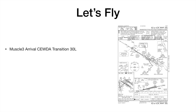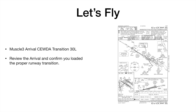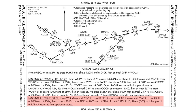So let's go fly it. This is what we were given: the Muscle 3 arrival, the CUDA transition for Runway 30 Left. We'll go over the approach plate in a minute. First, you want to review the arrival and confirm you've loaded the proper runway transition into your FMS or GPS — whatever system you're using — that you've loaded it properly. They always have this description on the FAA charts at the bottom where you see 30 Left, which is what we were given, and it'll describe all the way from Wolves on to the 30 Left transition.